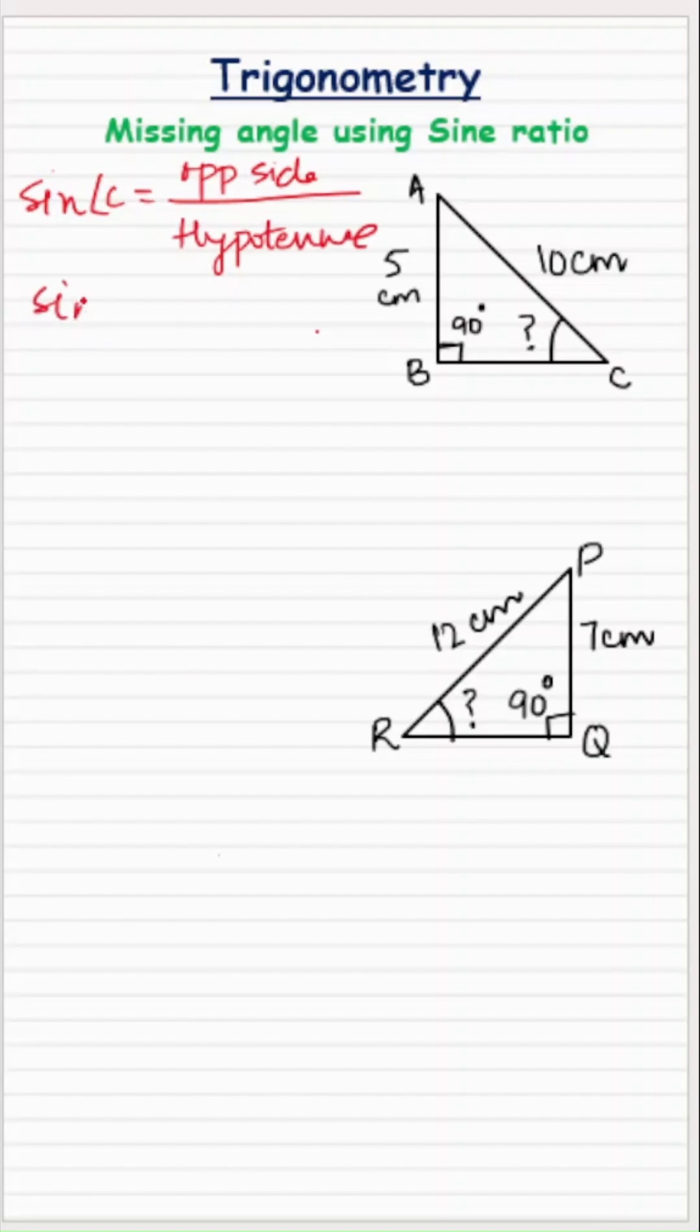So sine of angle C is equal to what is the opposite side to angle C? It's 5 and what is the hypotenuse? 10. So sine of angle C is equal to 1 half.